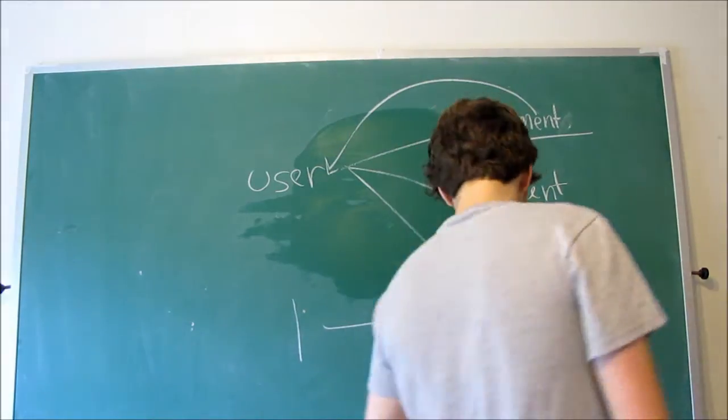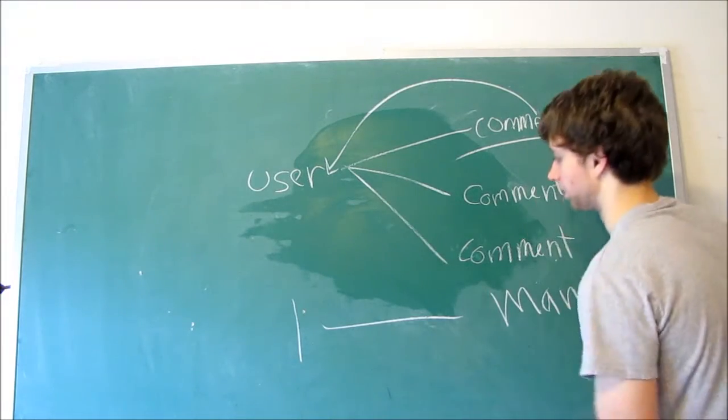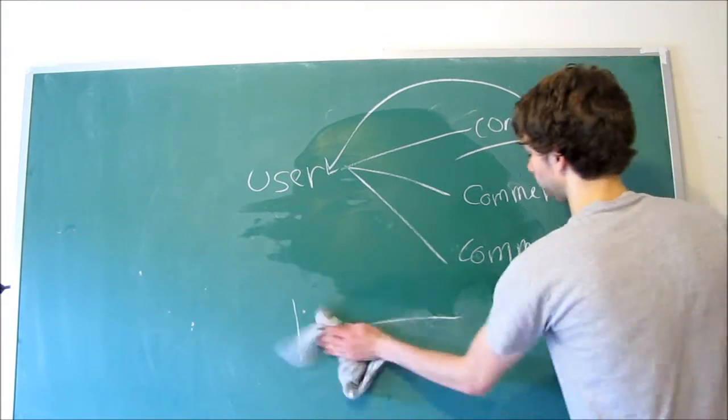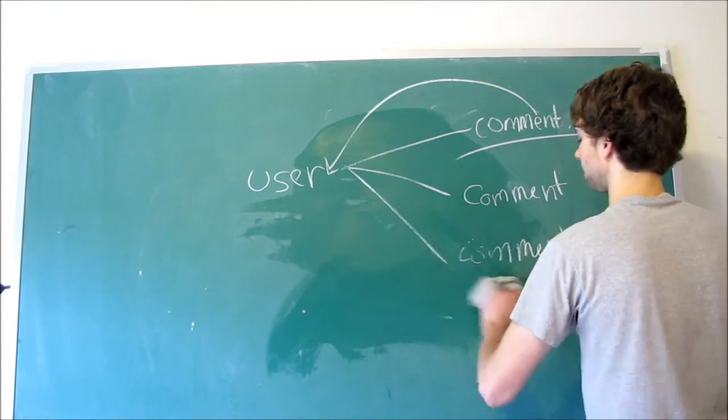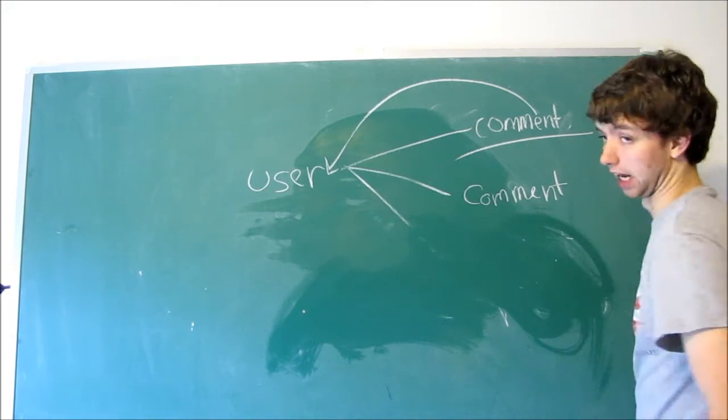So this is how a one-to-many relationship works. If you want to think of, again, the marriage thing, think of a king. We'll just name him King Sam.